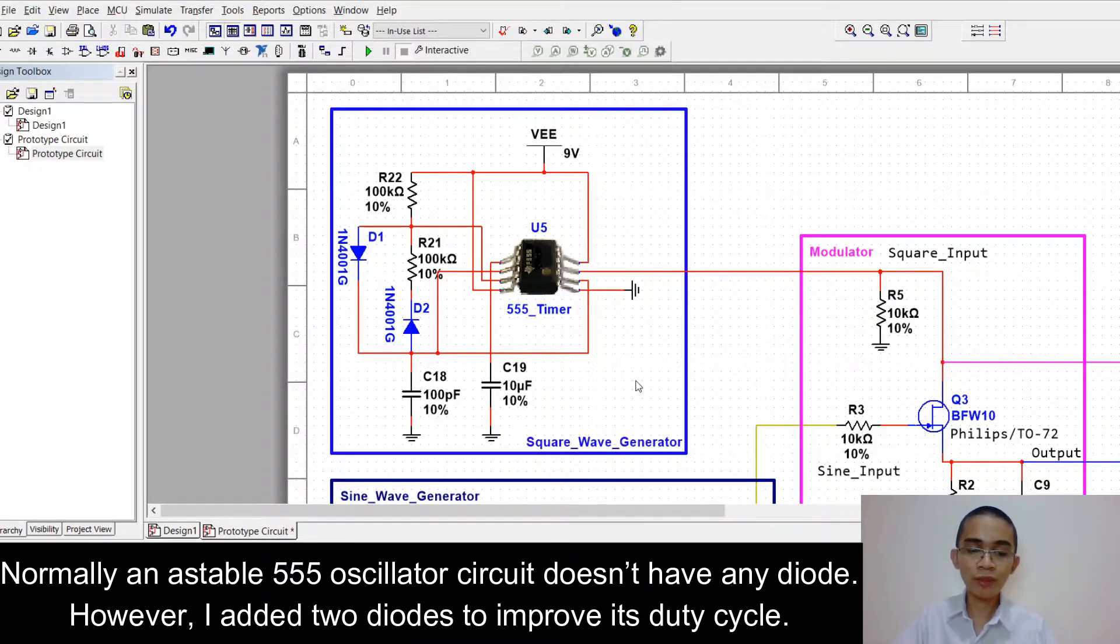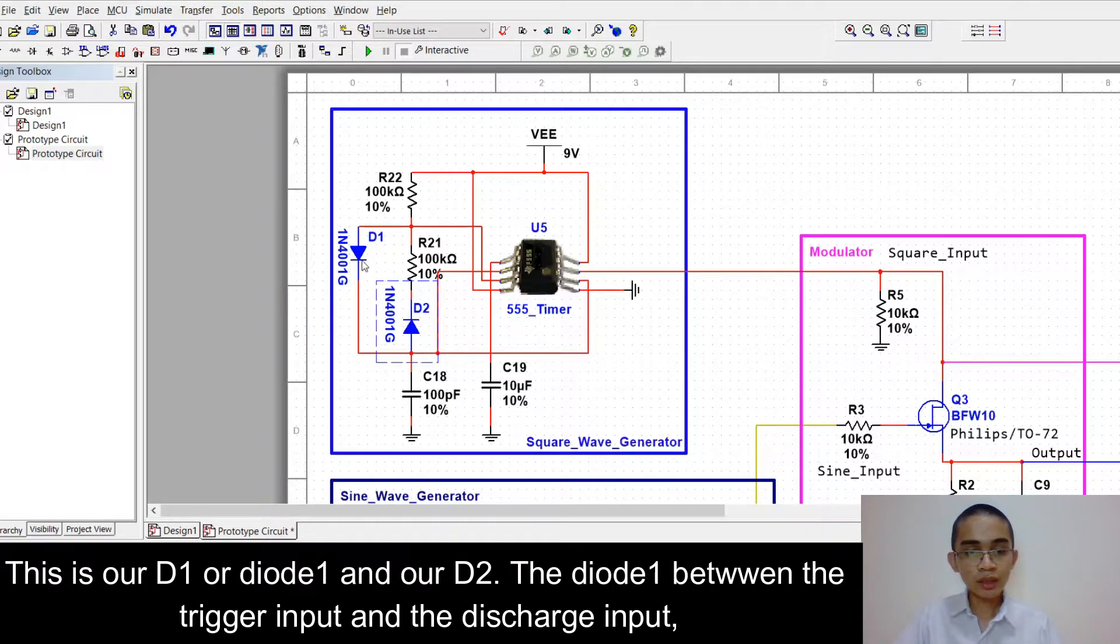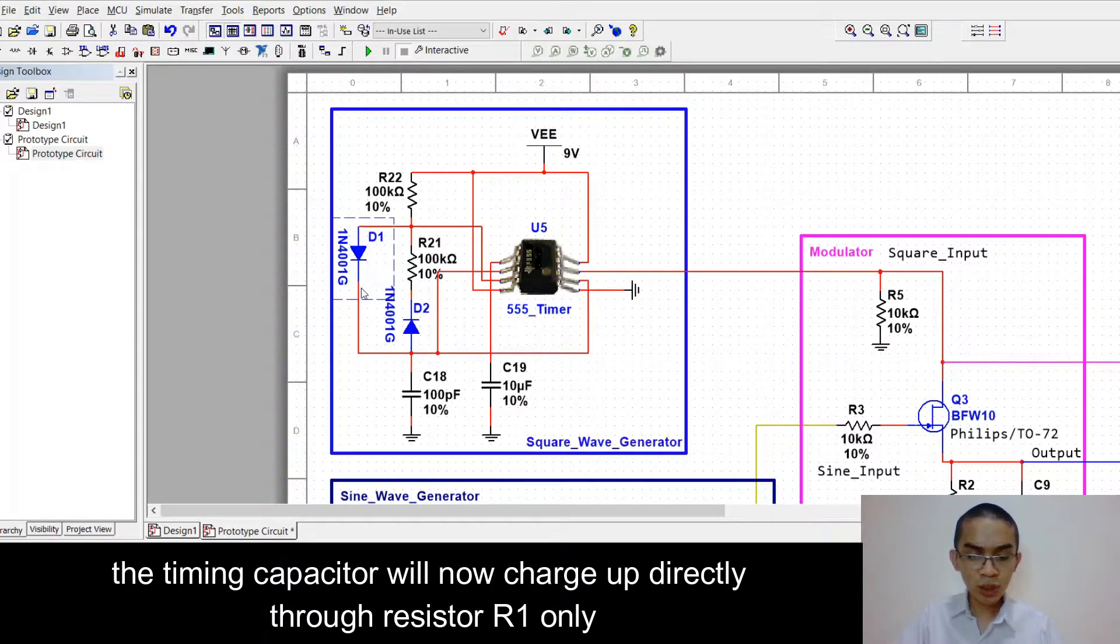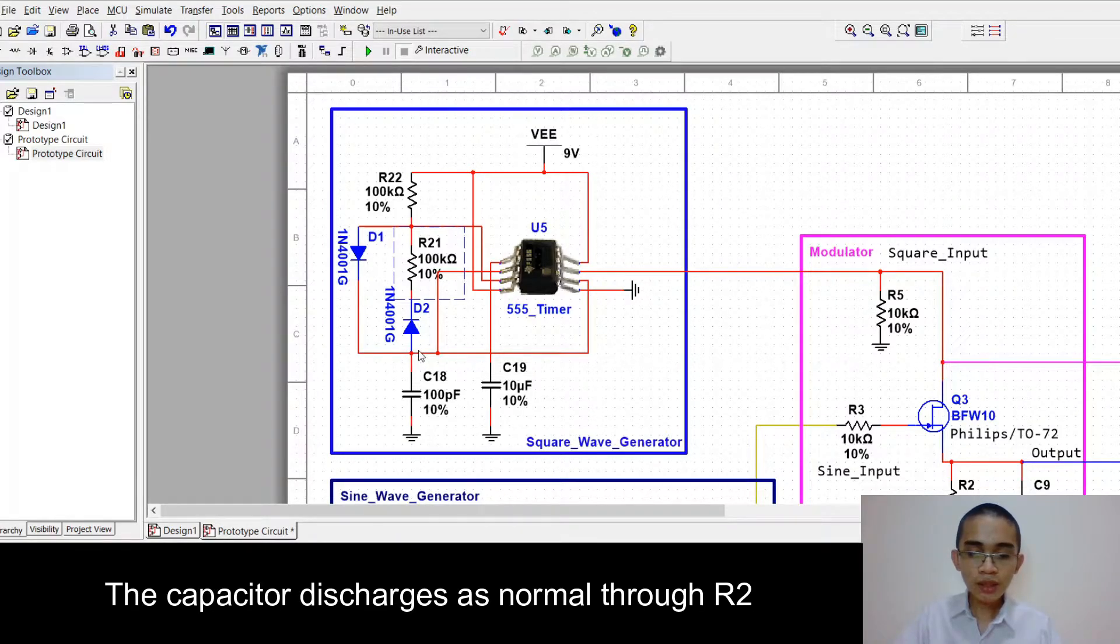Normally, an astable 555 oscillator circuit doesn't have any diodes. However, I added two diodes to improve its duty cycle. By connecting some diodes, this is our D1 or diode 1 and our D2, the diode 1 between the trigger input and the discharge input, the timing capacitor will now charge up directly to resistor 1 only, as the resistor 2 is effectively shorted out by the diode. The capacitor discharges as normal through resistor 2.